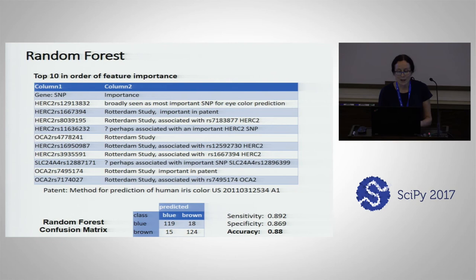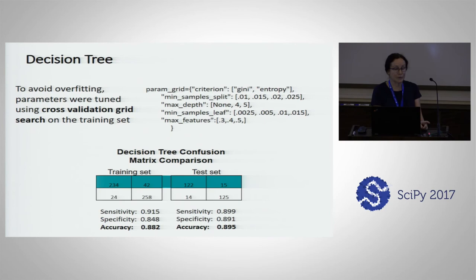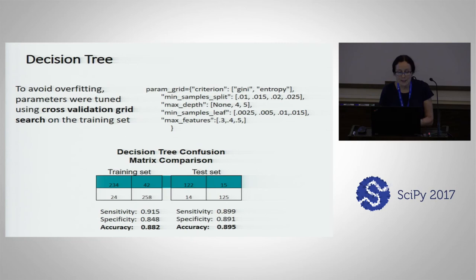Looking at the Random Forest confusion matrix — I didn't tune it, I gave it 3,000 trees, and it did pretty well, coming up with an accuracy of 88%. For the decision tree, to avoid overfitting, parameters were tuned using cross-validation grid search on the training set. Comparing training set to test set results, we see there wasn't overfitting — the accuracy was actually a little bit higher on the test set. Decision trees are prone to overfitting, so it was necessary to tune it, and good to see the result was not overfit.